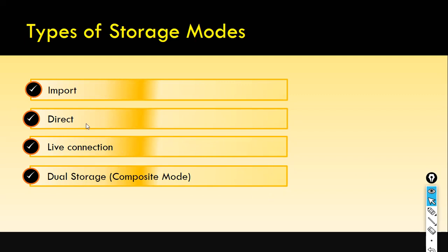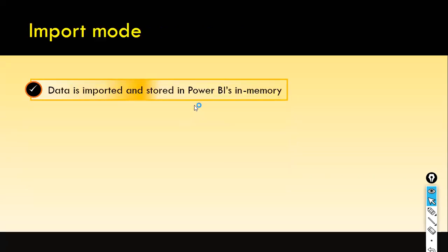We have already discussed import and direct modes to some extent. In the case of import mode, the data gets imported and stored in Power BI in-memory. For example, when you load an Excel file into Power BI Desktop, the data gets loaded in Power BI's memory. Anything in memory has pretty fast performance.